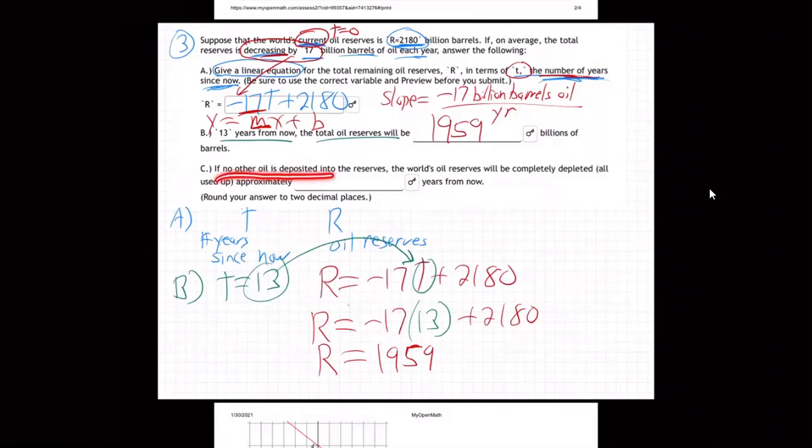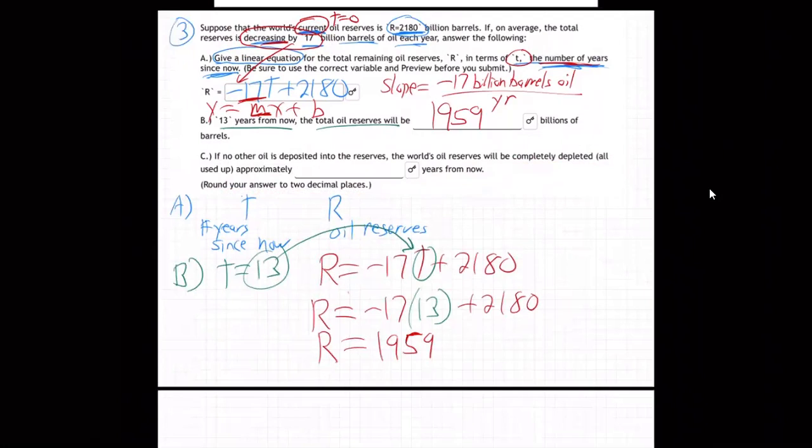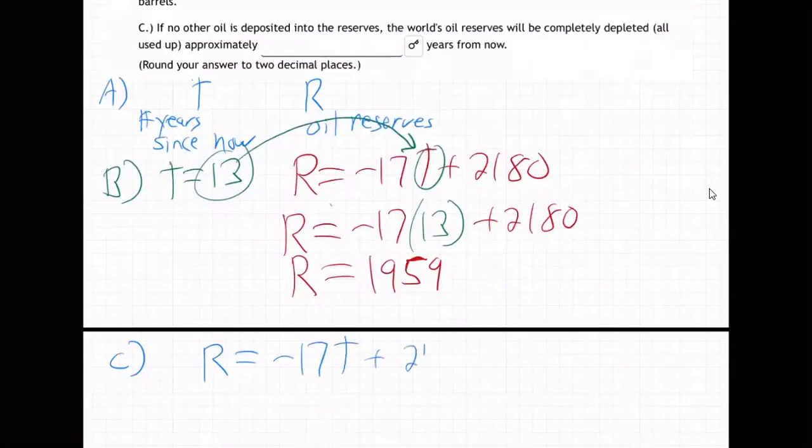Okay, and then C, if no other oil is deposited into the reserves, the world's oil reserves will be completely depleted approximately how many years from now? Ah, that's a good question. So if it just keeps going down, right, it's decreasing 17 billion barrels of oil each year. If nothing else happens, it just keeps going down. So, how many years from now will it be completely depleted? Well, let's take the formula.